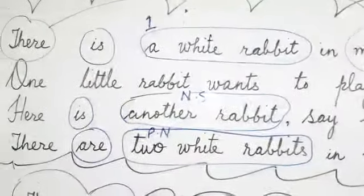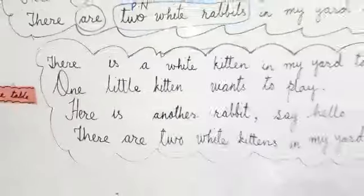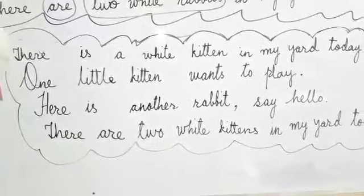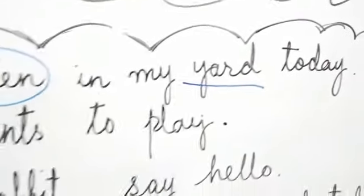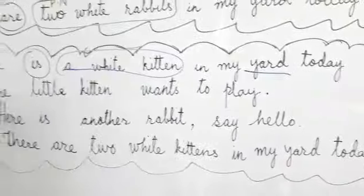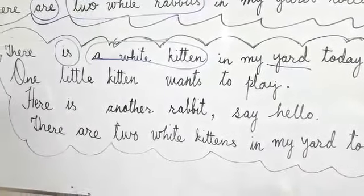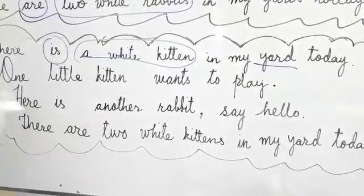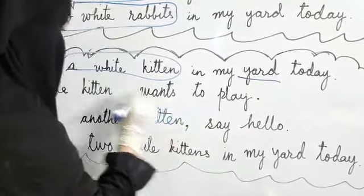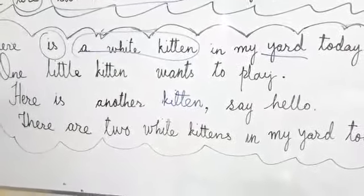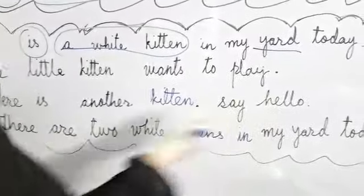Let's come to the next example. 'There is a white kitten in my yard.' How many kittens? One. Where? In my yard. 'One little kitten wants to play.' Kitten means the small baby of a cat. 'Here is another kitten. Say hello.' So 'there are two white kittens in my yard.' You can check it according to the first example — the same pattern applies.